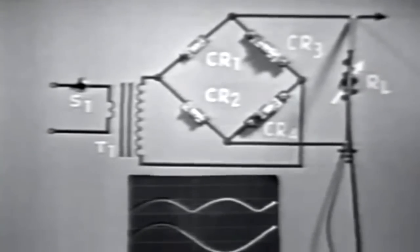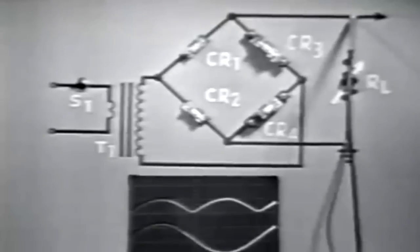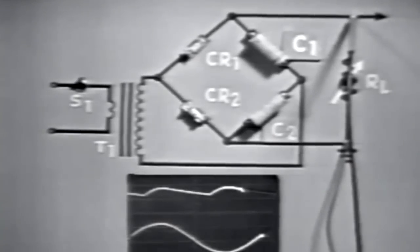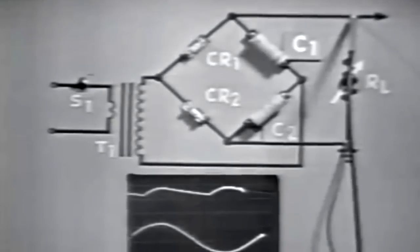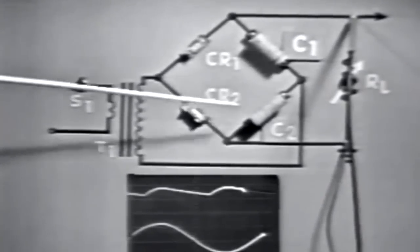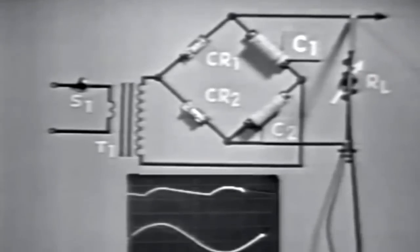The lower trace represents the input AC signal and the upper trace represents the output DC voltage. Now let's change this circuit slightly. We've removed CR3 and CR4 from the bridge circuit and substituted two capacitors. Notice that the peak output voltage of the circuit has increased to nearly twice that of the bridge. By placing these two capacitors — C1 and C2 — in series, we've changed the operation from a bridge rectifier to a voltage doubler.